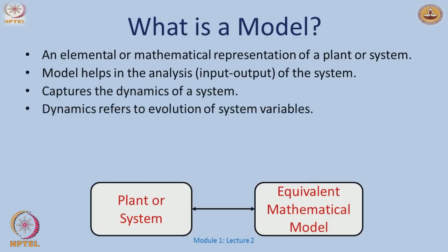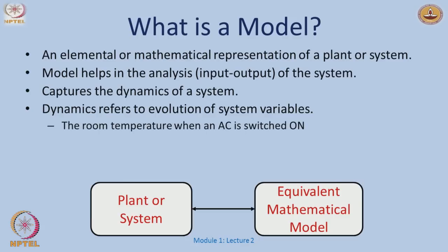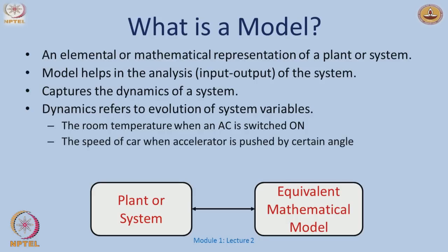This model should capture the dynamics of the system. These dynamics refer to the evolution of system variables — for example, how the temperature behaves or how fast or slow it goes to the desired temperature as soon as the AC is switched on, how the speed of a car changes before it reaches the desired speed, or in an electrical circuit, how a current or voltage evolves.